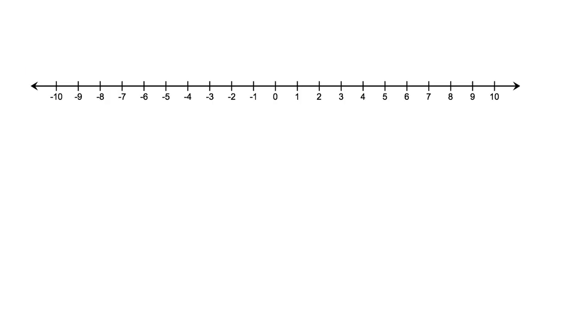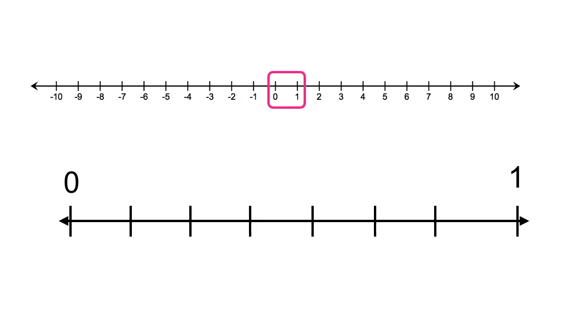We're going to change gears for a second, and now talk about number lines. So remember that number lines look a little bit like this. You have sometimes a zero in the middle, and you might have numbers to the left, which are going to be negative, and numbers to the right that might be positive. And within each of these segments, you can have more segments.